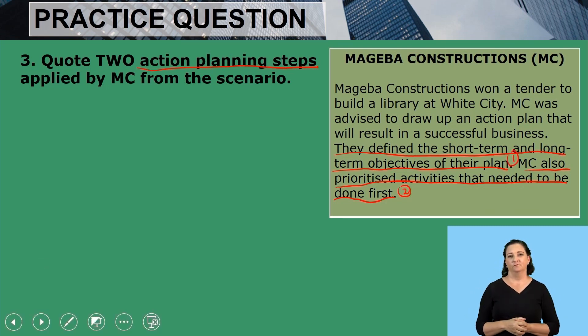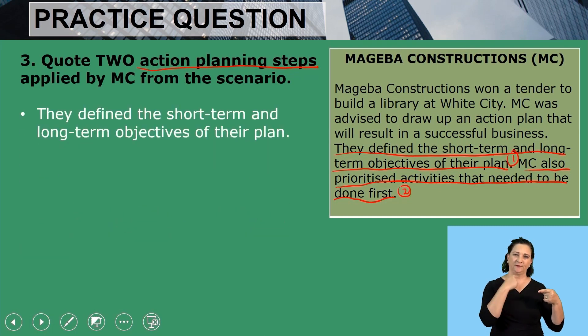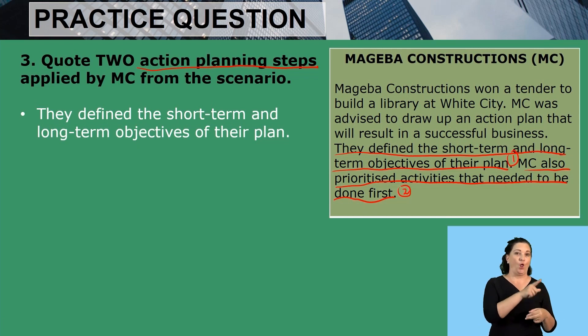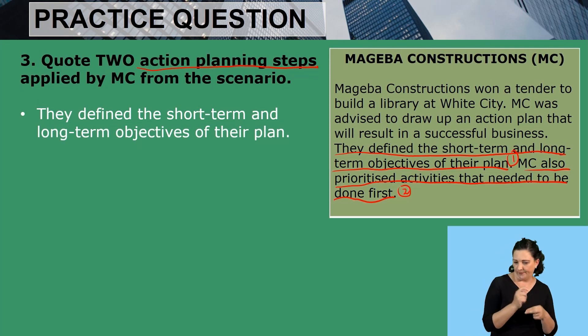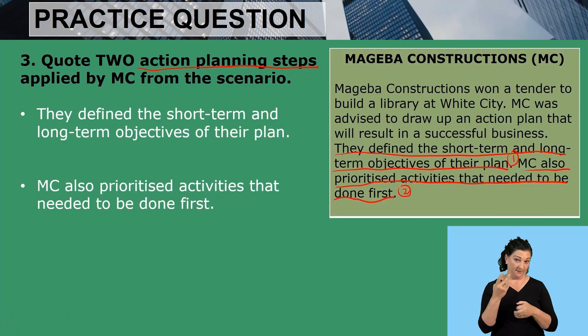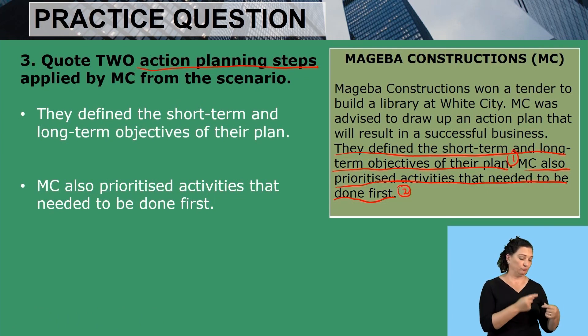So to quote: number one — 'they defined the short-term and long-term objectives of their plan' — meaning they defined what they want to achieve in the short term and what they also want to achieve in the long term. Number two — 'MC also prioritized activities that needed to be done first' — remember, on action planning steps you start with the important activities, schedule them first, followed by the least important activities.